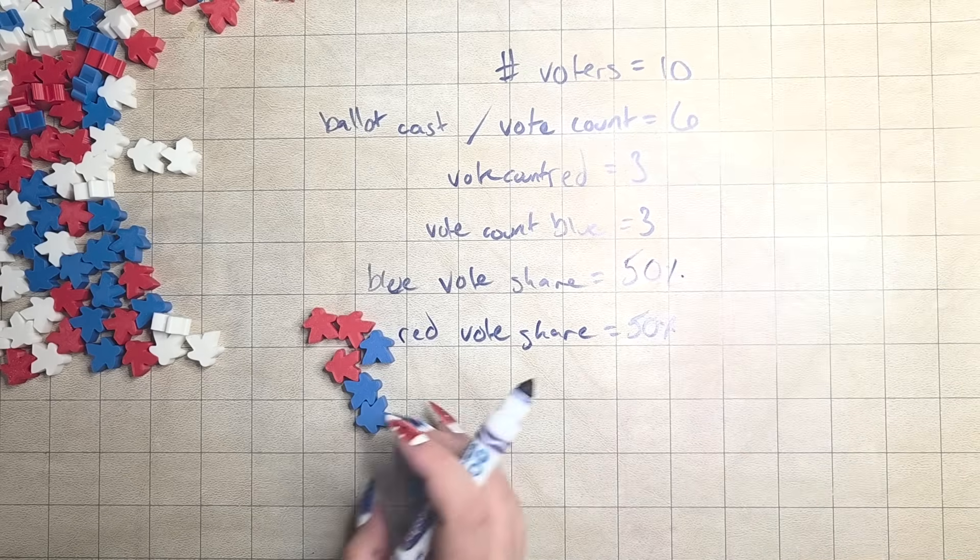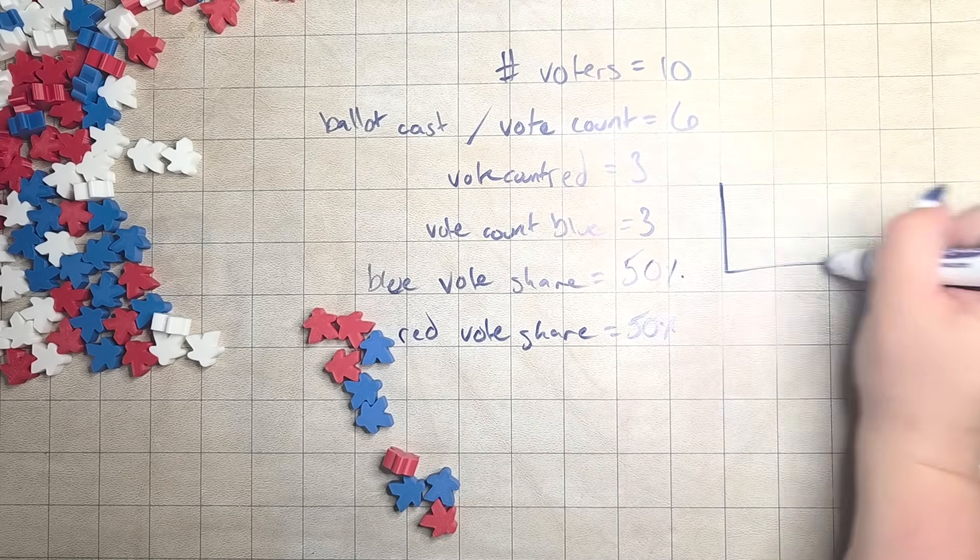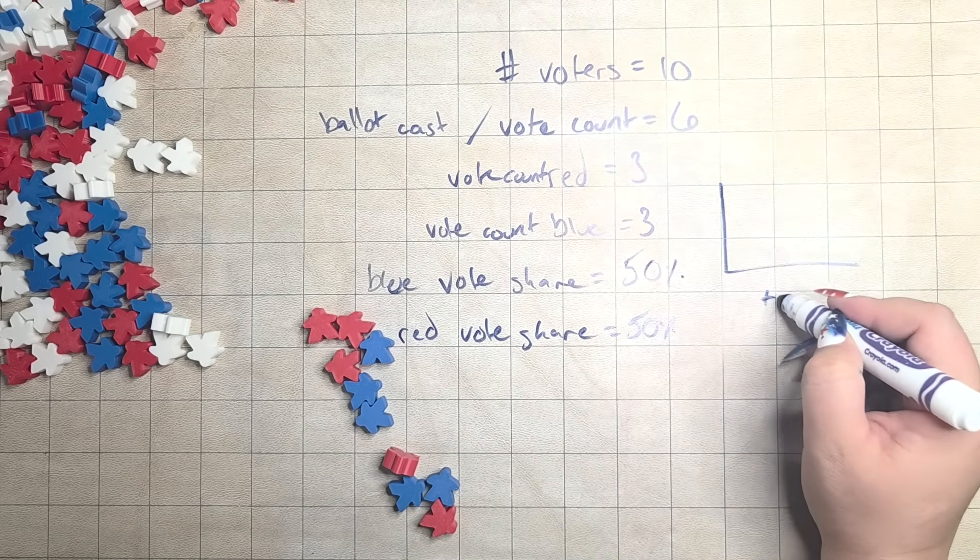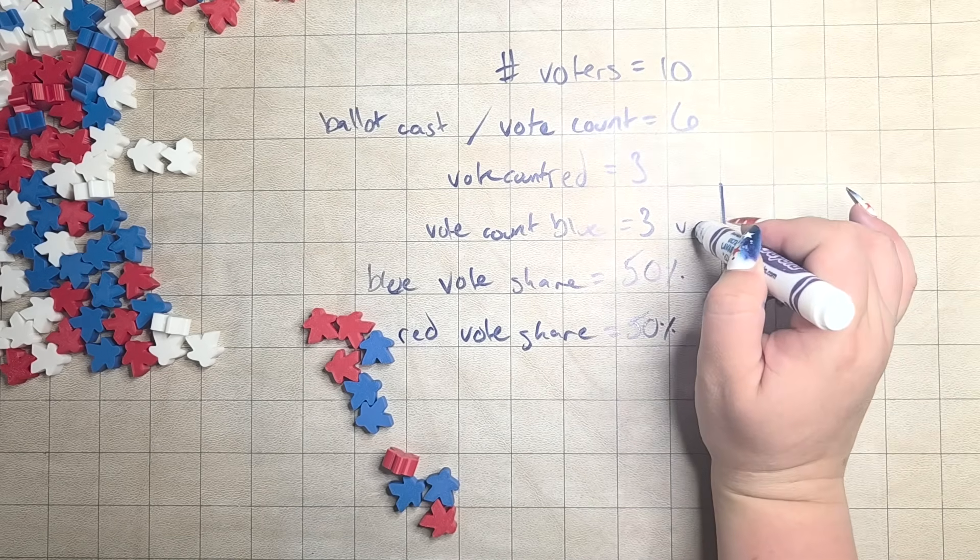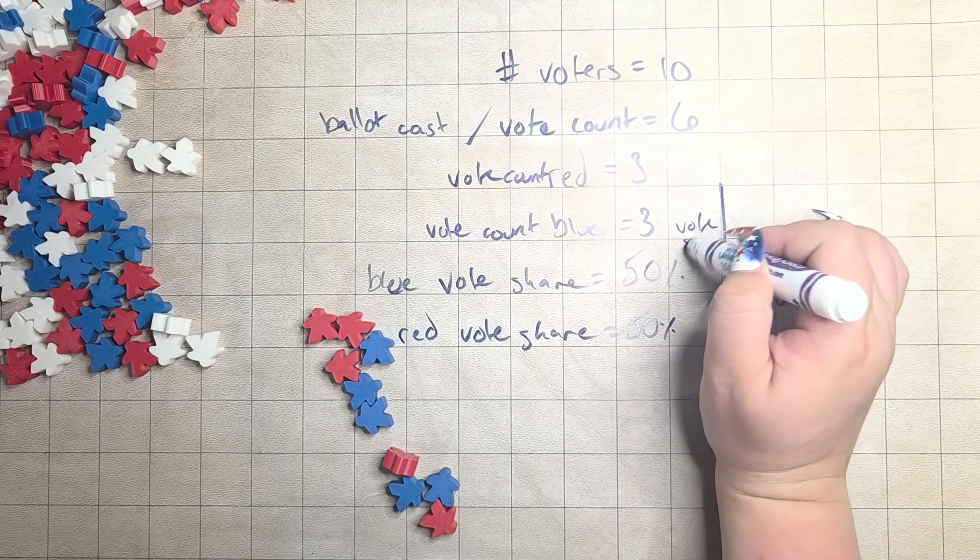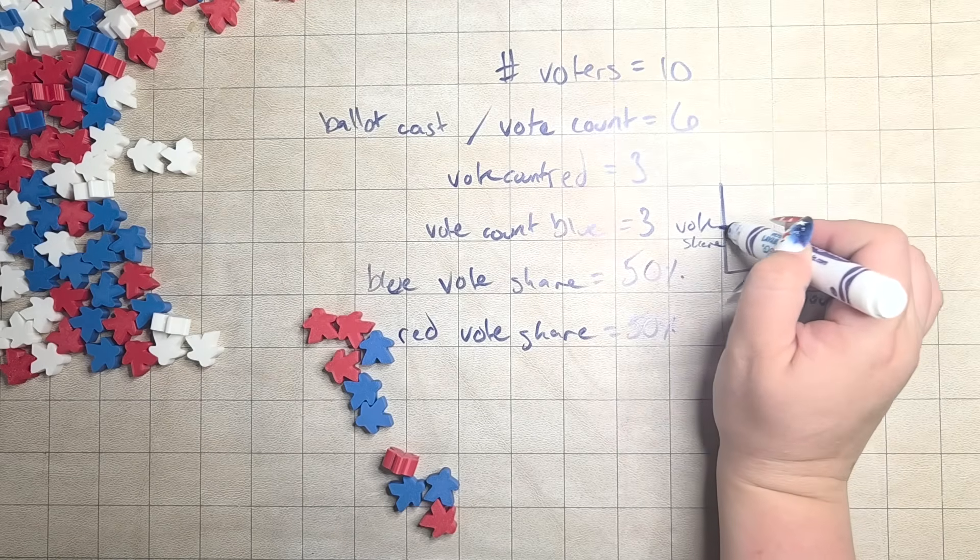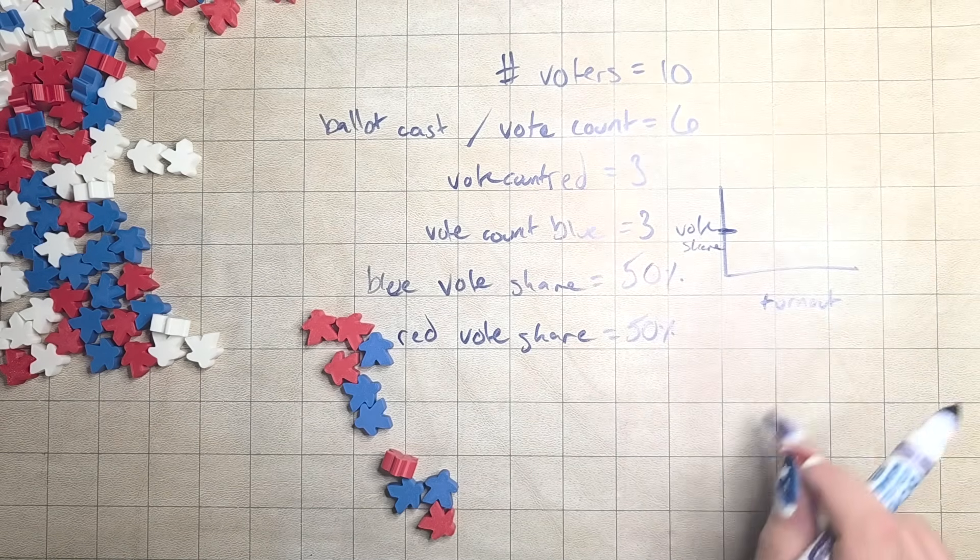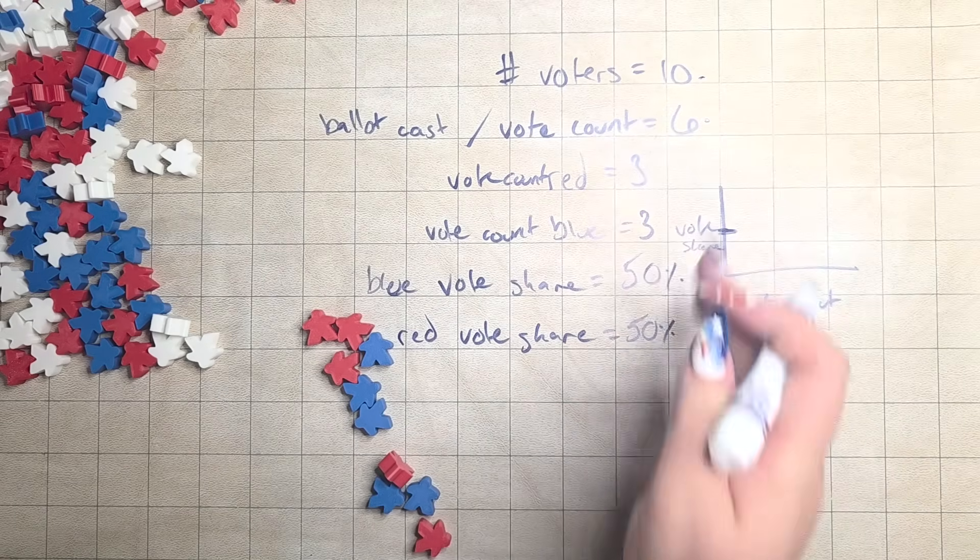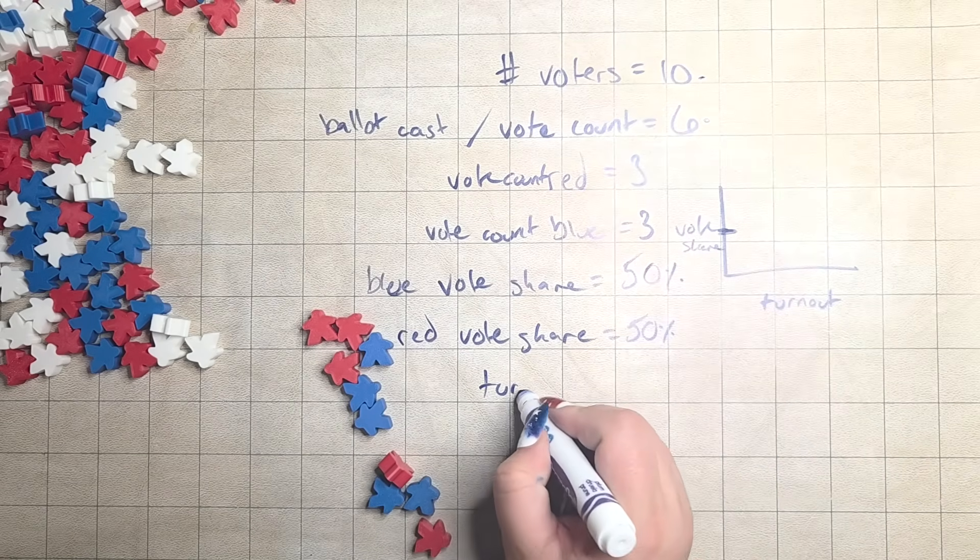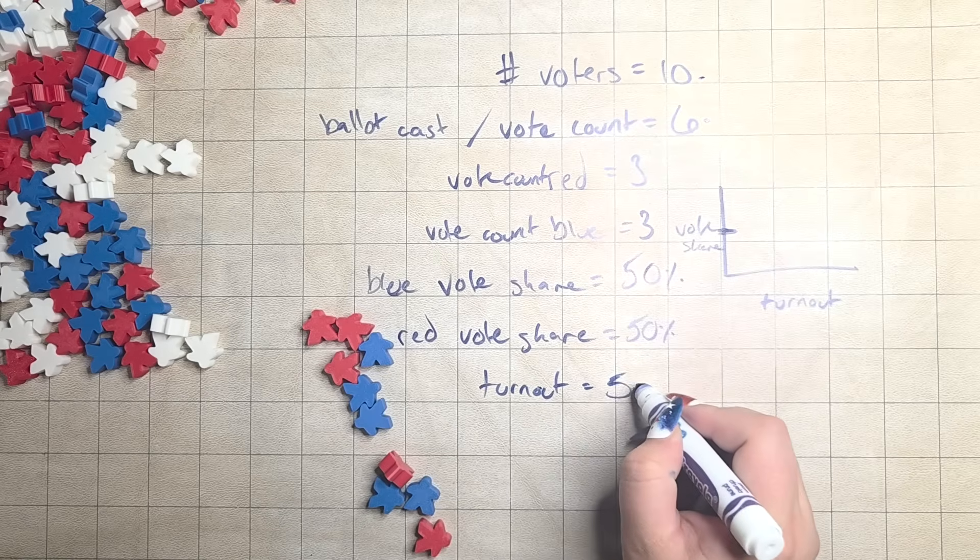So, on a graph, of course, if you were doing a scatter plot, you would have turnout along the bottom axis, in a lot of our cases, and vote share here on the Y. And now, how do you get the turnout? So, of course, 6 people cast their votes out of 10, and that is 60%, right? 60% turnout.